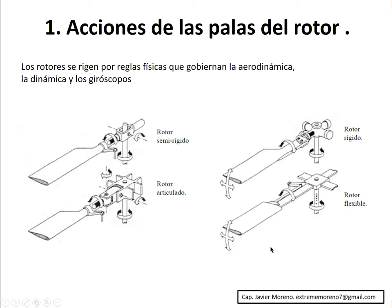The actions of the rotor — to understand these movements and why they occur, it is very important to remember that the rotors are ruled by the physical rules that govern aerodynamics, dynamics, and gyroscopes. And according to the type of rotor, they will also depend on these actions. That is, they depend on these physical rules and also on the way in which the rotor is designed.